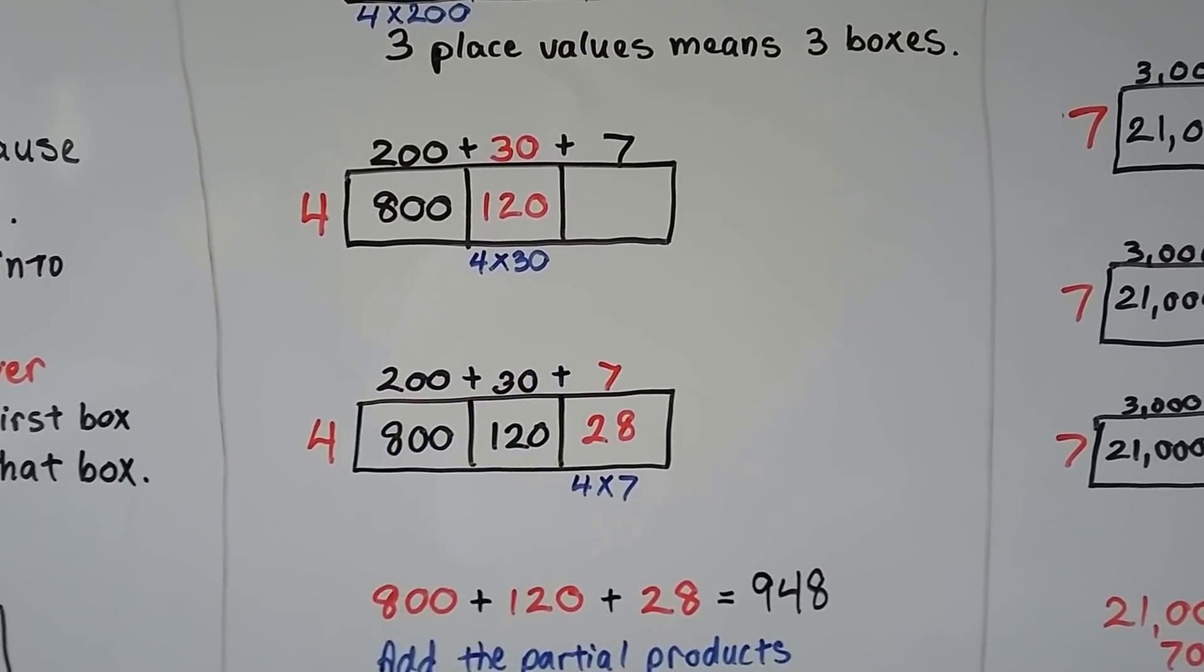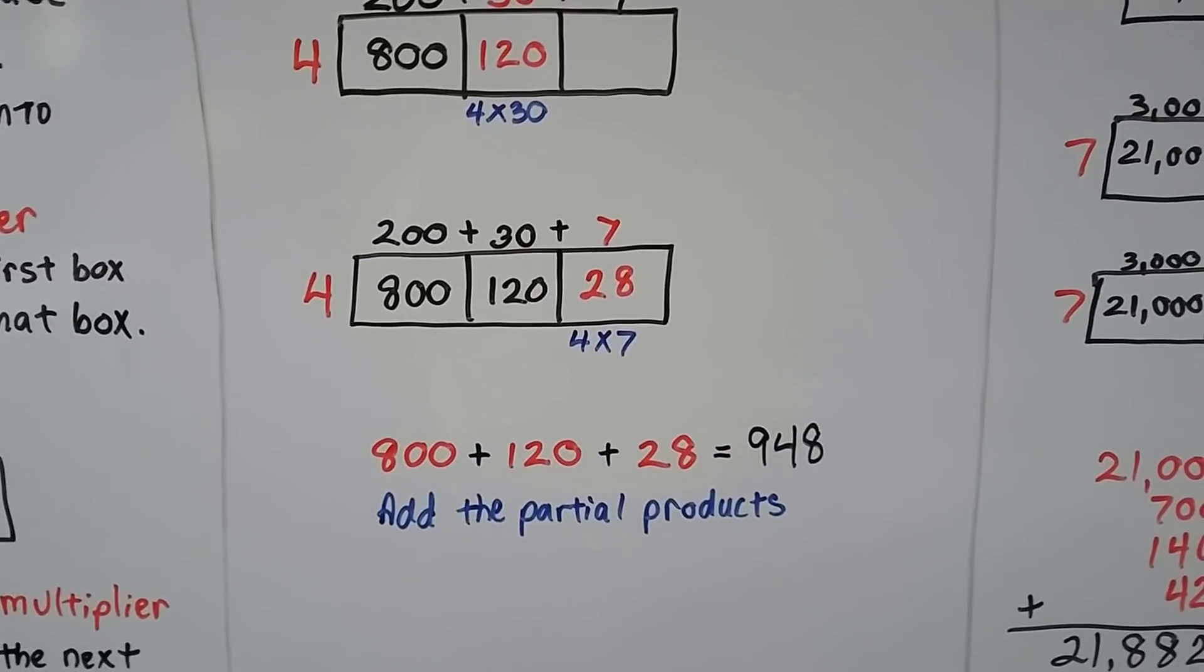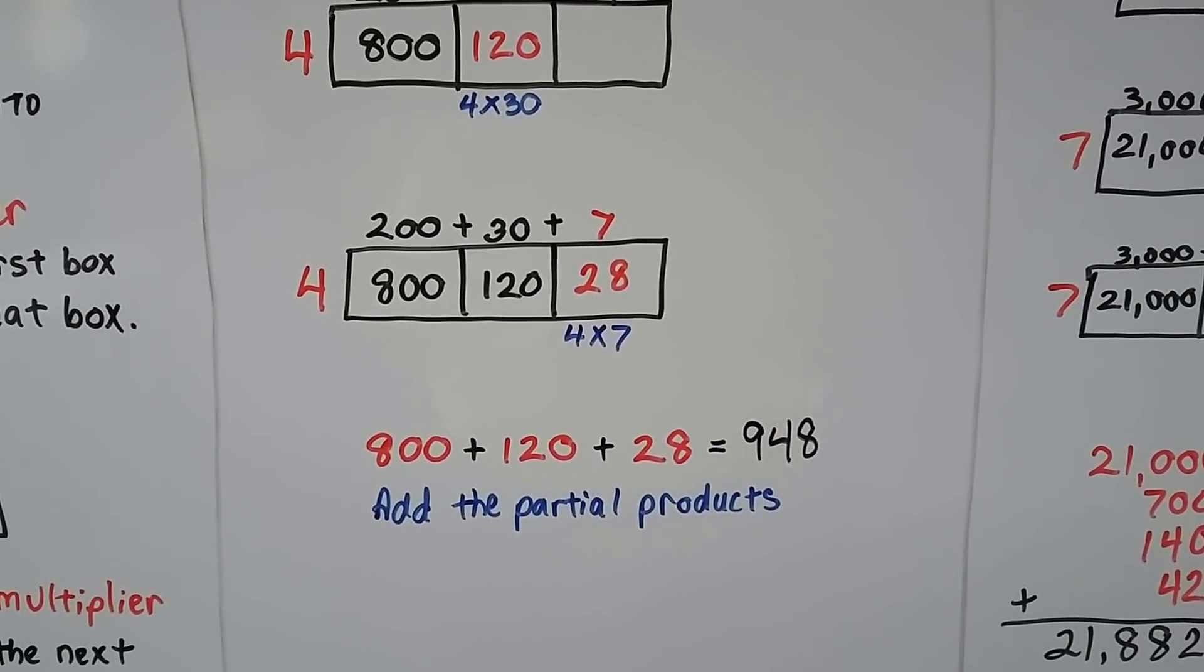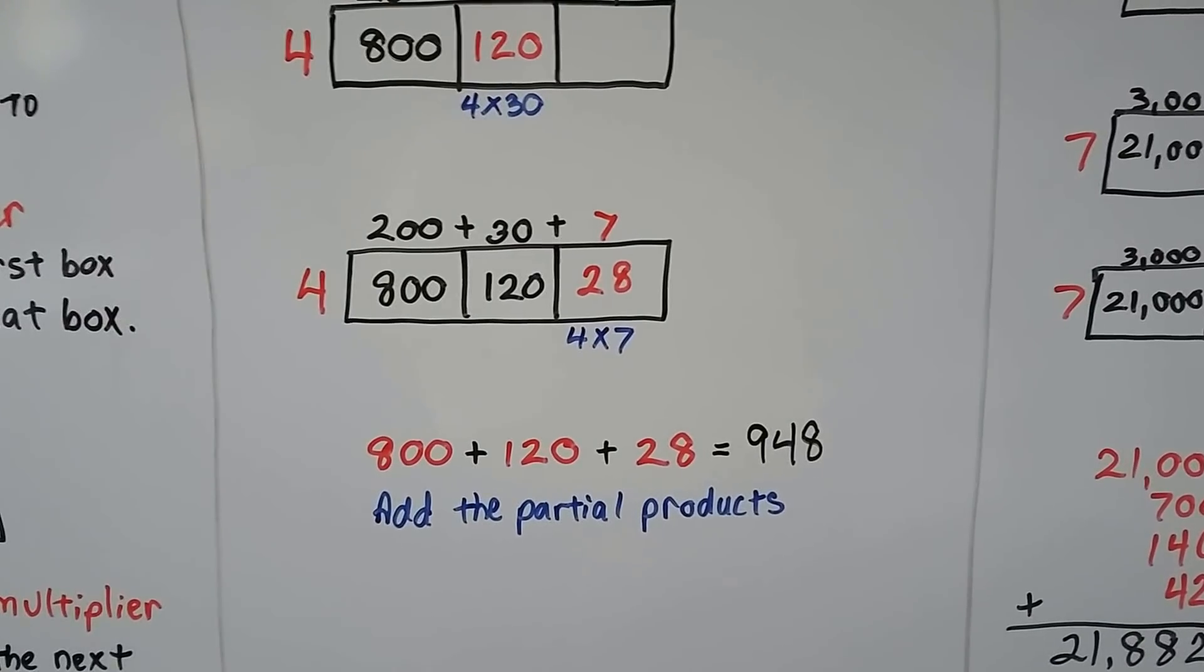Then we do 4 times 7, which is 28, and we add the partial products. 800 plus 120 plus 28 equals 948.